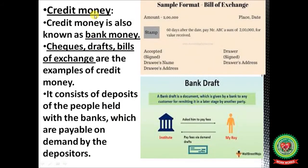Credit money is also known as bank money. Checks, bank drafts, and bills of exchange are examples of credit money. It consists of deposits of people held with the banks, payable on demand by the depositors. Bank money accounts include saving accounts, current accounts, and term deposits — all of these are known as credit money.